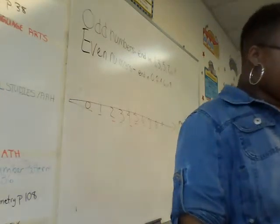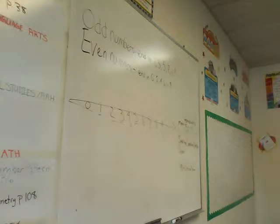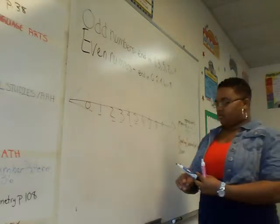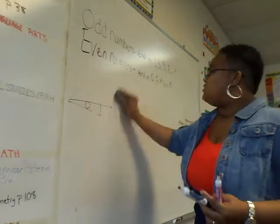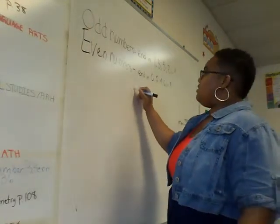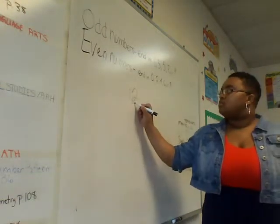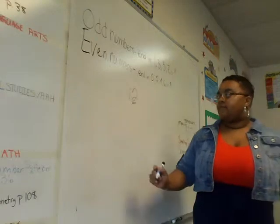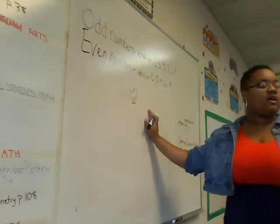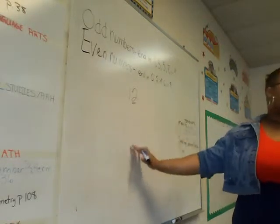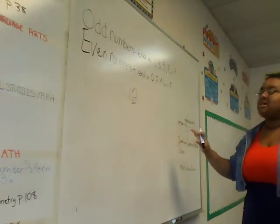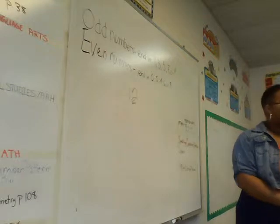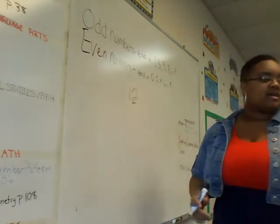All right. Let's look at number one — tell whether each number is odd or even. Count those counters. How many counters do you have for number one? Twelve. So is twelve odd or an even number? Even. It ends in two. So why is it even if it ends in two? We're looking at the last number. If you have one-digit numbers, you just look at that one digit, but if you have multiple-digit numbers like twelve, you're going to look at the last number. So the number twelve — is it an odd or an even number? Even. Good job.